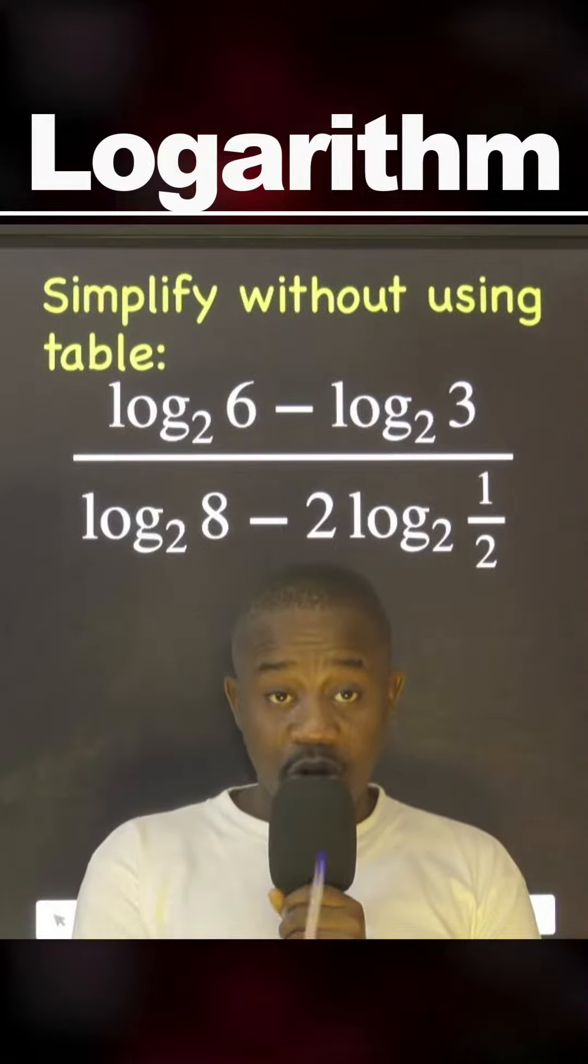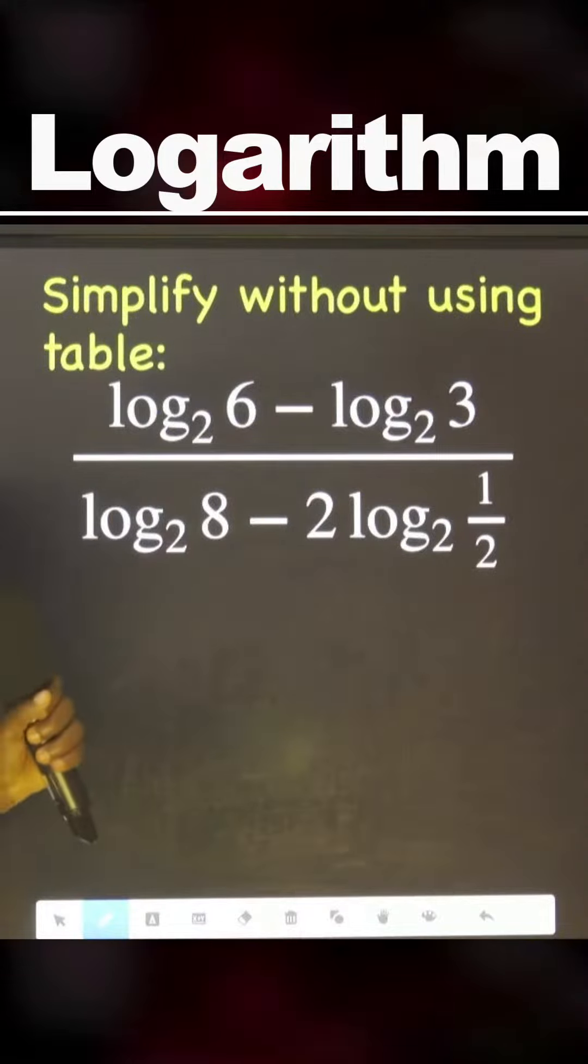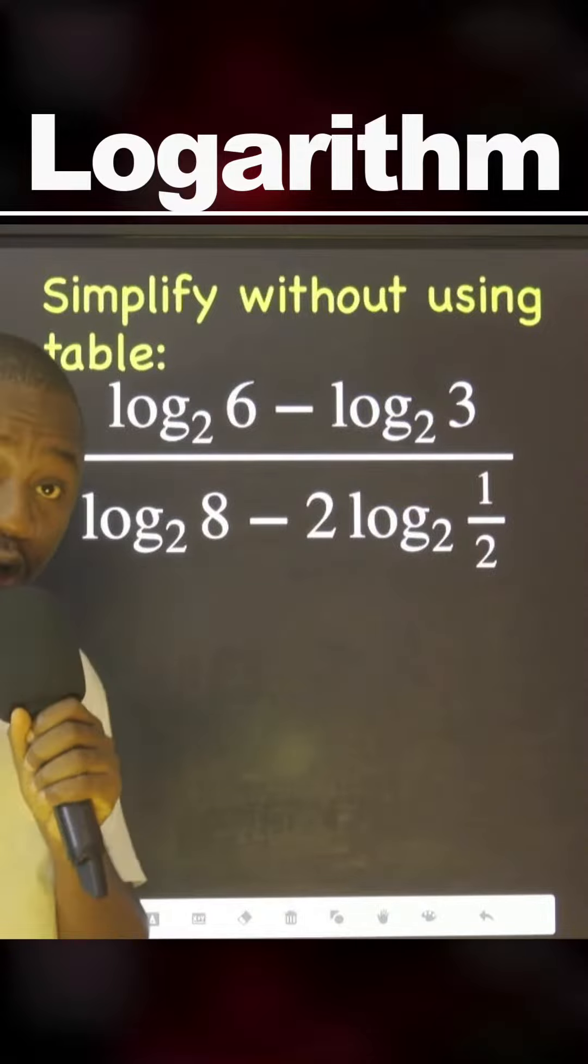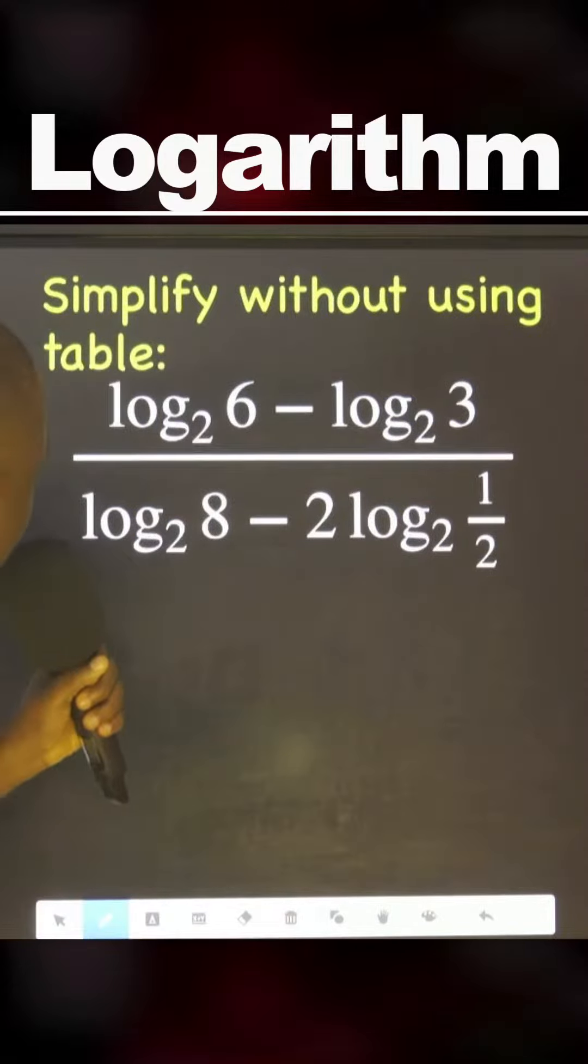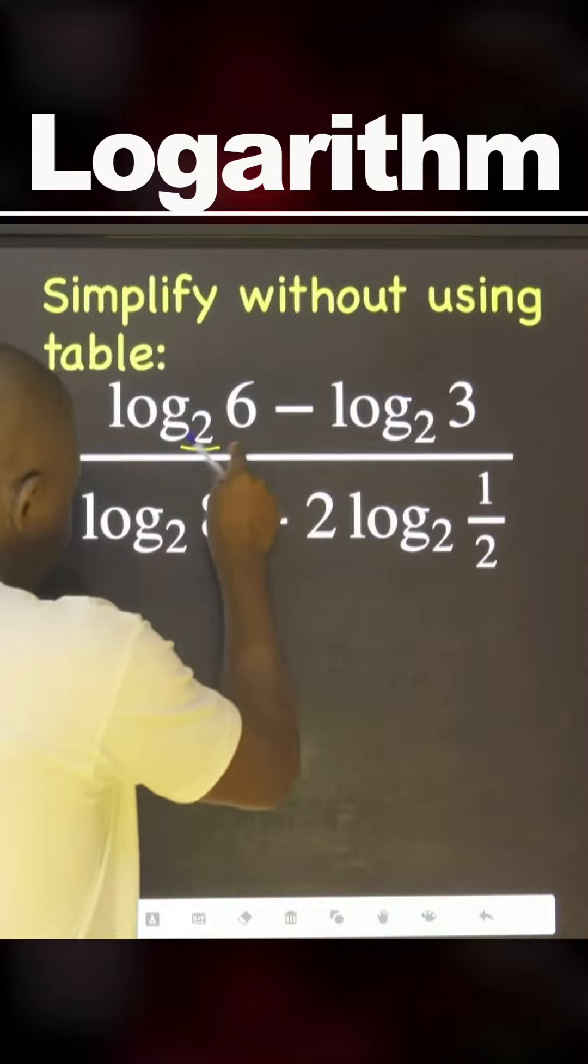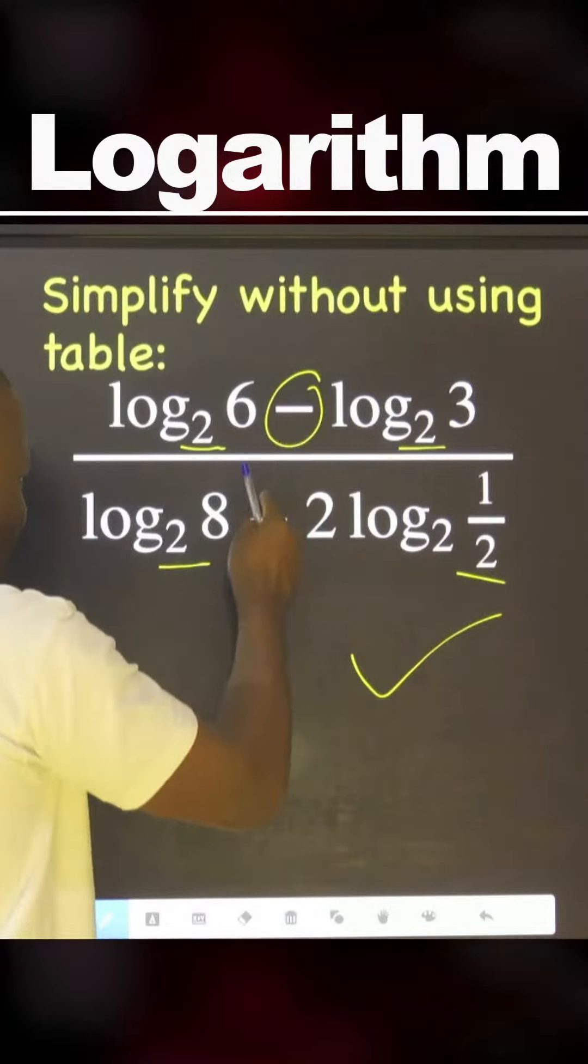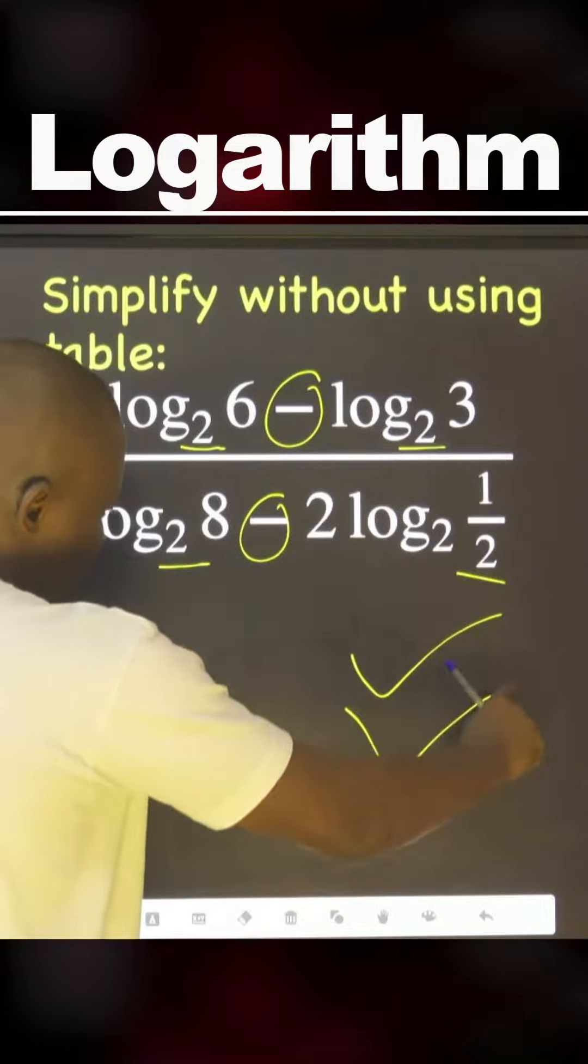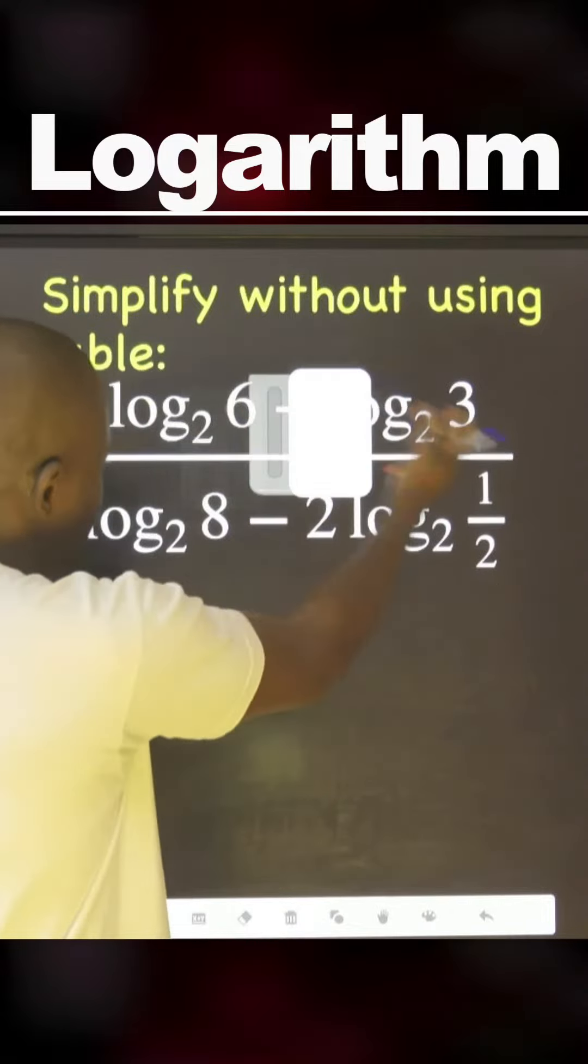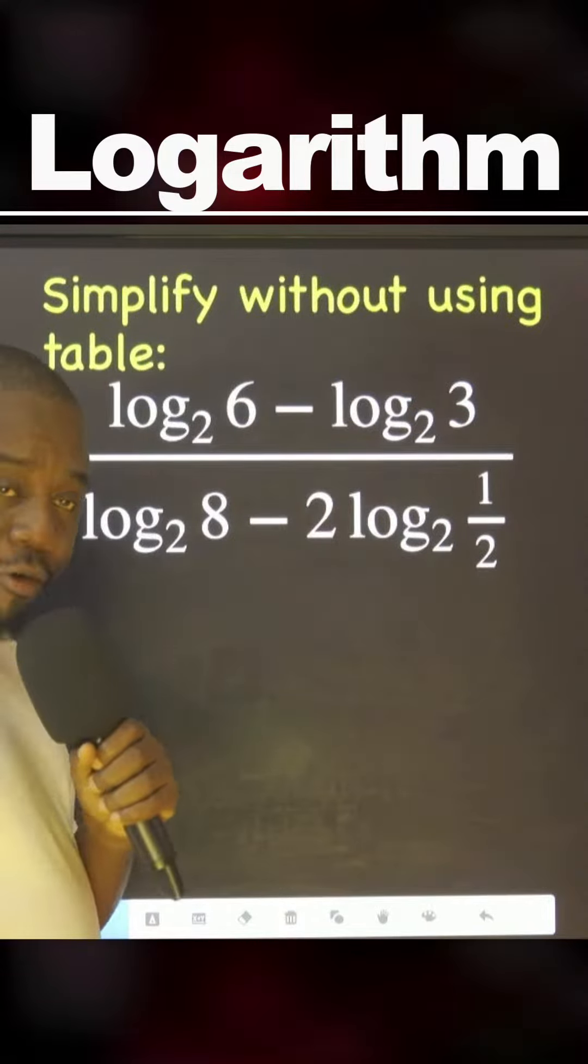Let's work on this: simplify without using a table. The first thing I'm seeing here is that they all have the same base, that is very good. Minus is separating them, that is also good - that is the second law of logarithm. With this we can move forward.